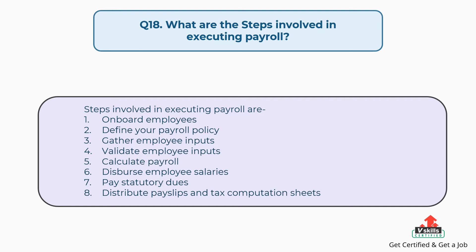Continuing the steps in executing payroll: fifth, calculate payroll; sixth, disperse employee salaries; seventh, pay statutory dues; and the last step is to distribute pay slips and tax computation sheets.